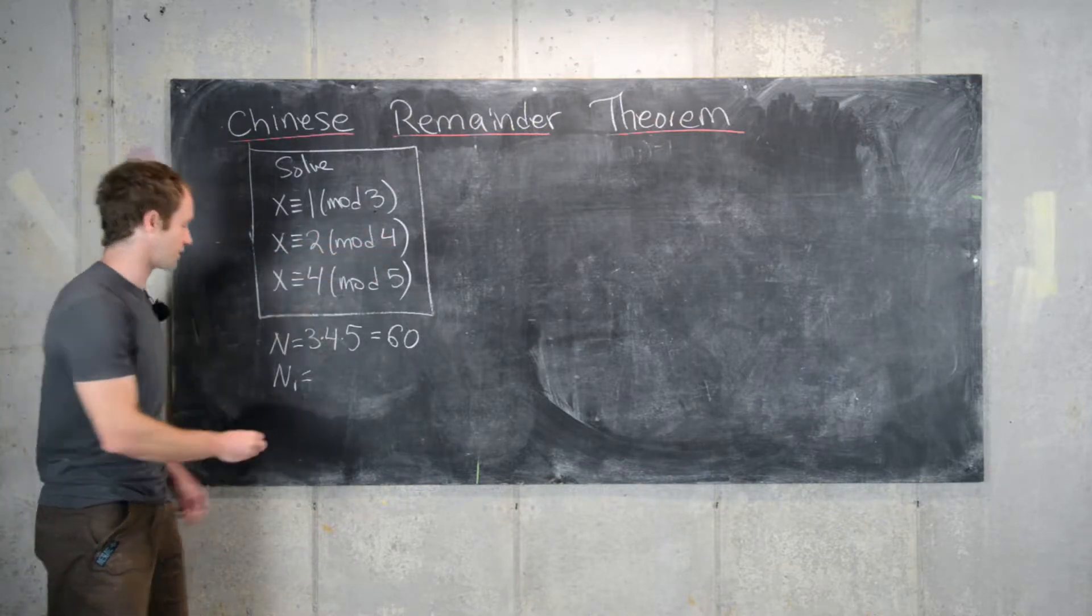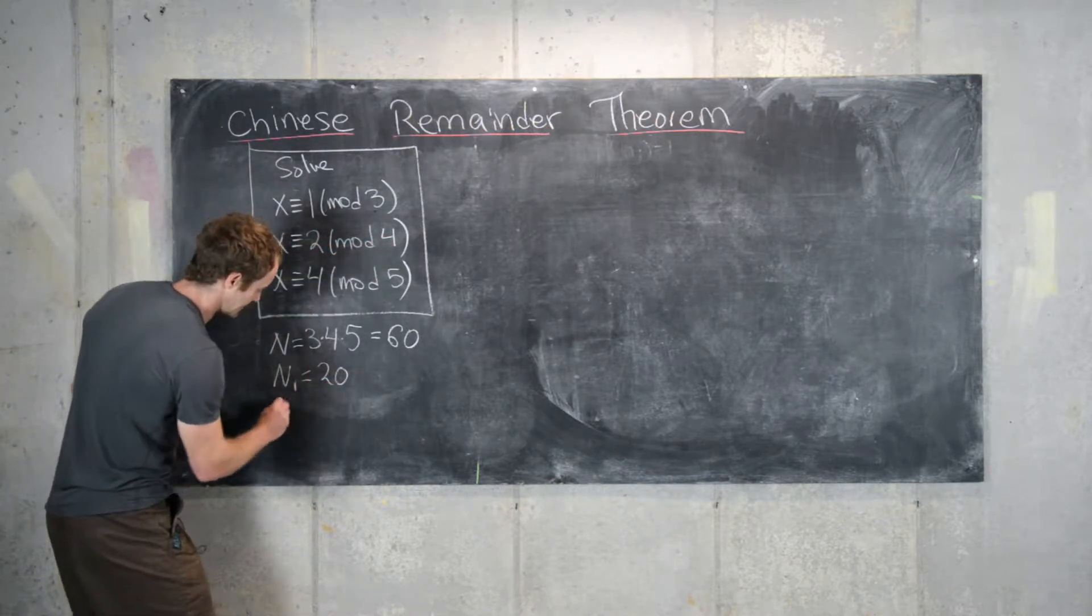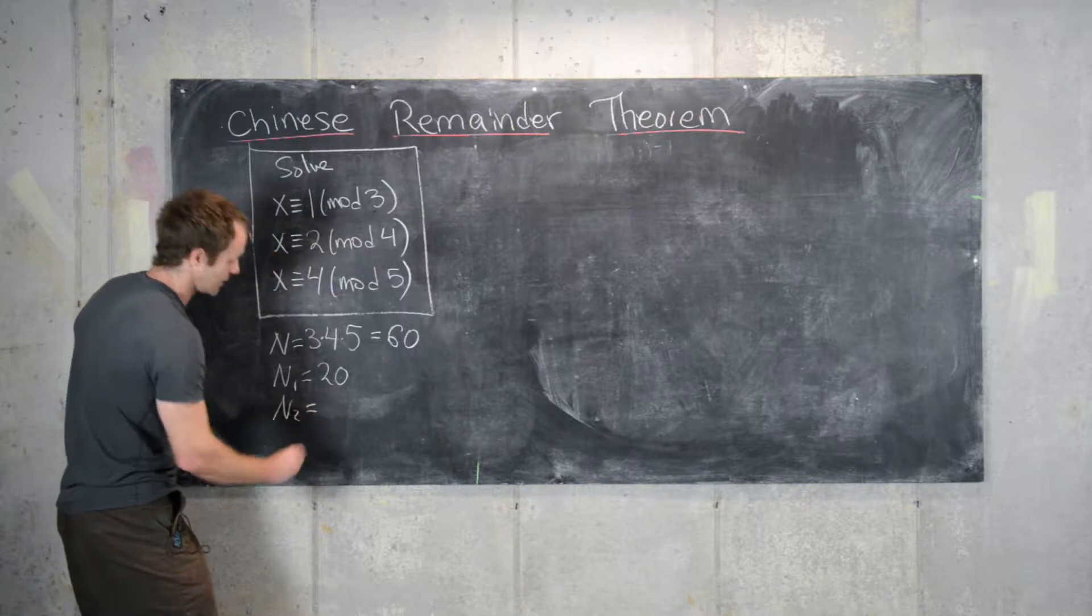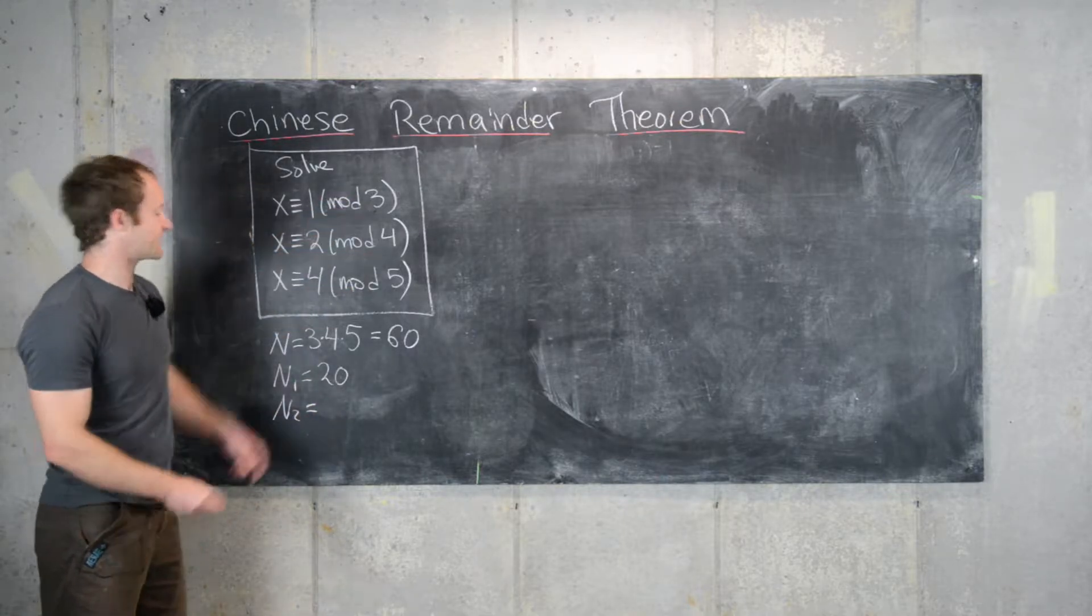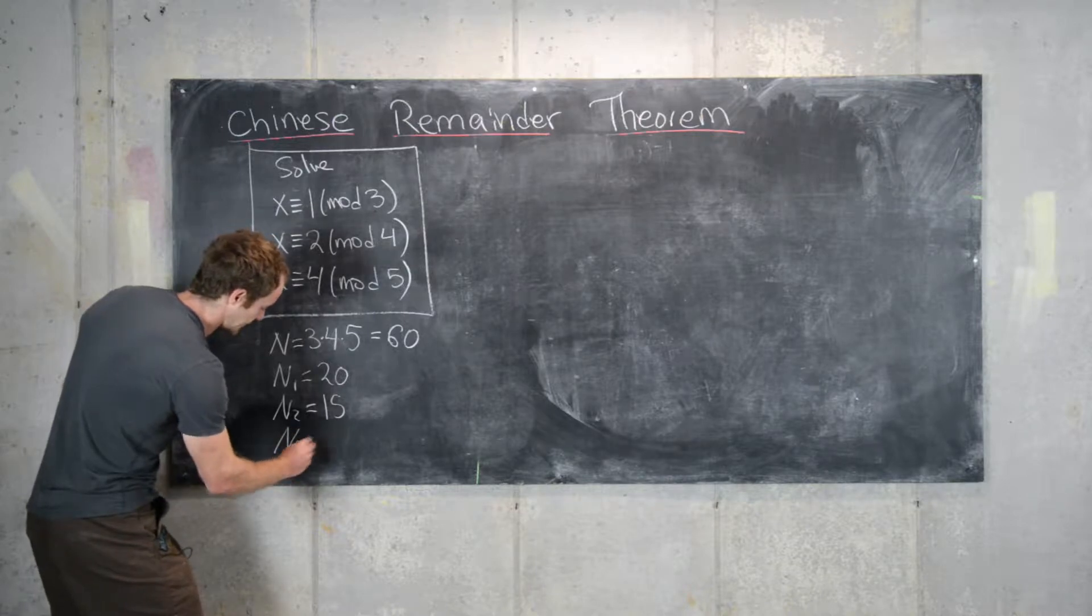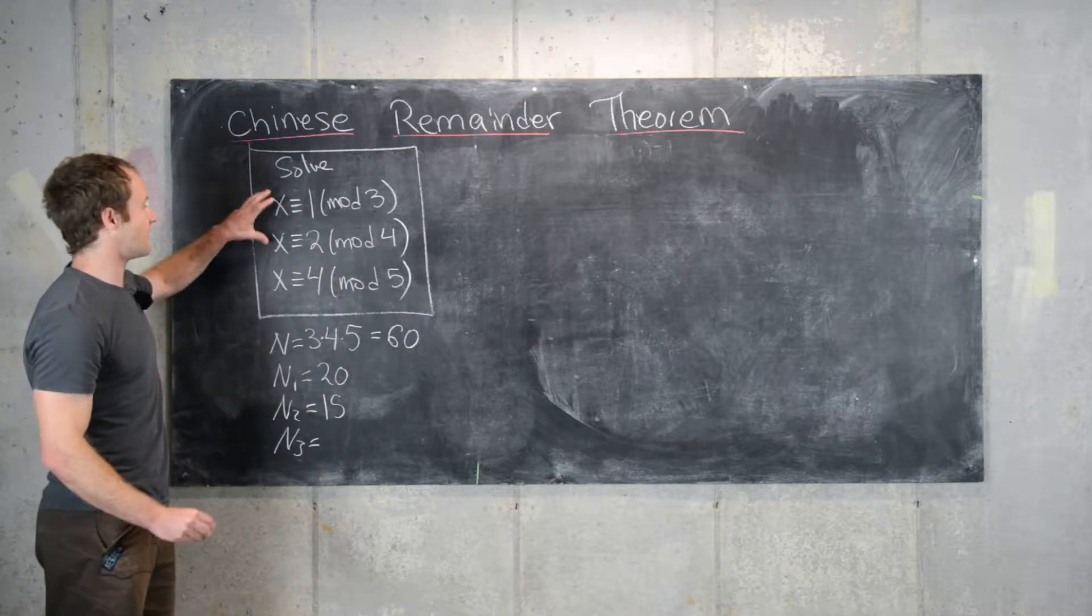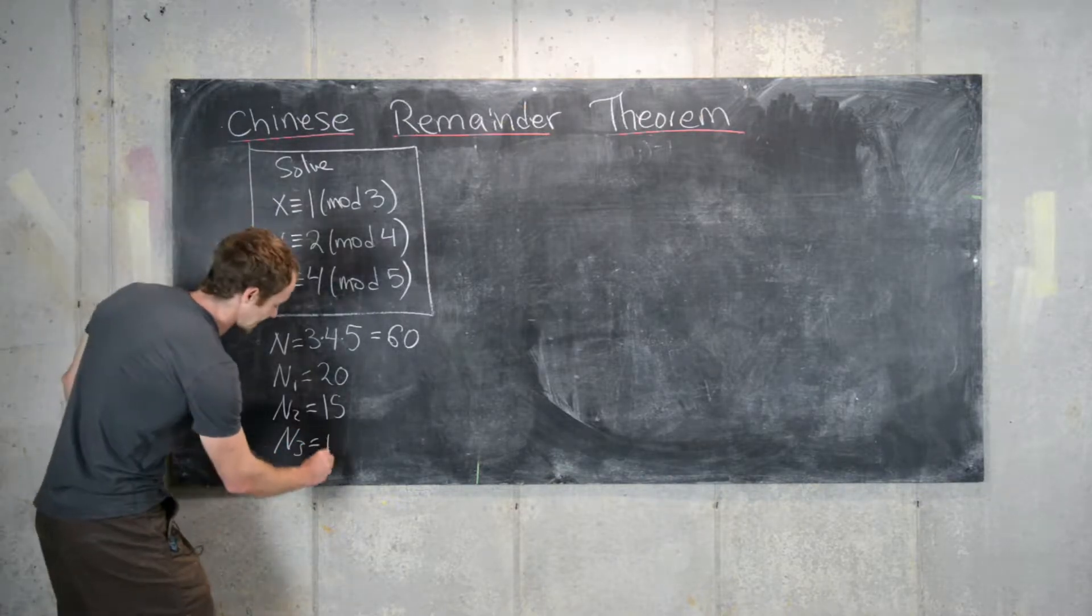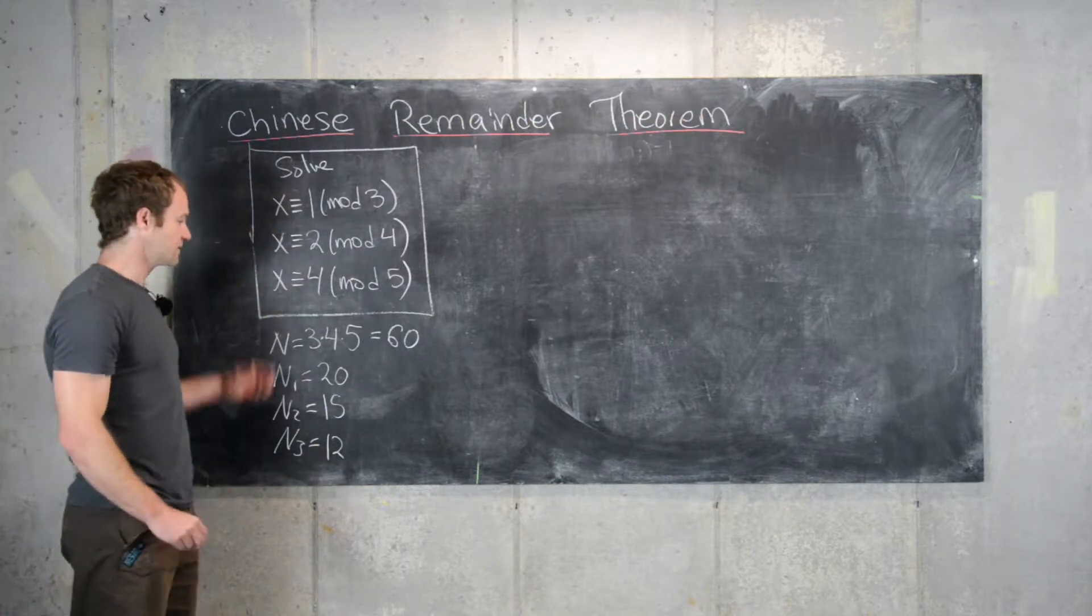And then n1 will be the product of everything but the first one, so that's 20. n2 will be the product of everything but the second one, so that's 15. And n3 will be the product of all but the third one, so that's 12. This is a good starting point.